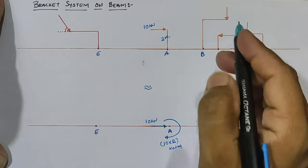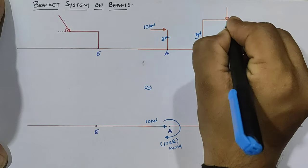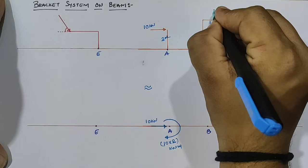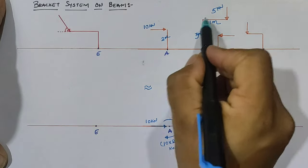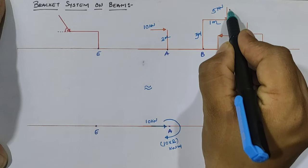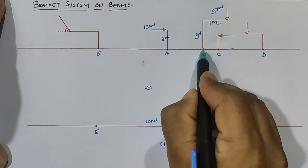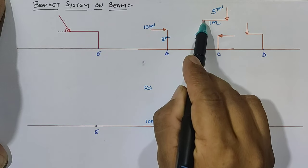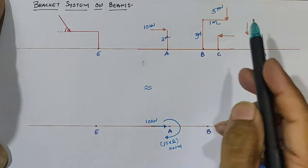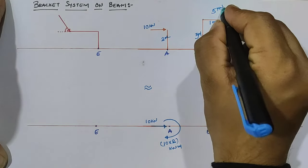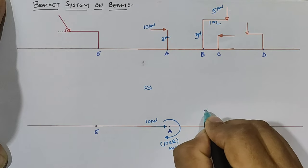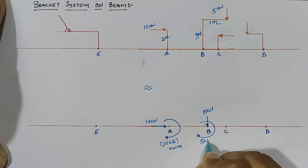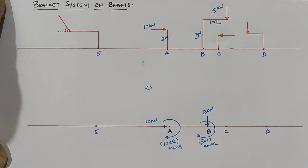At point B, the vertical column is 3 meters, the horizontal beam on the column is 1 meter, and the load on the bracket system is 5 kN. This 5 kN vertical load acts directly on point B in the vertical direction, and it also creates a clockwise moment of 5 × 1 at the column head, which transfers directly to point B.